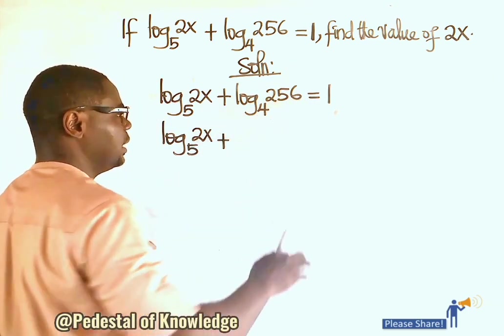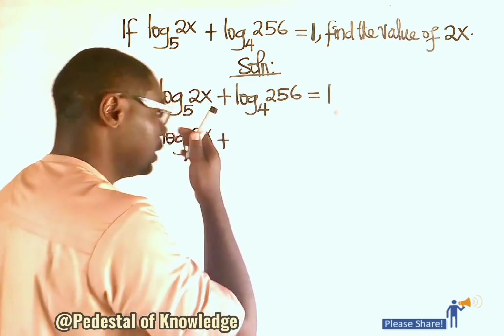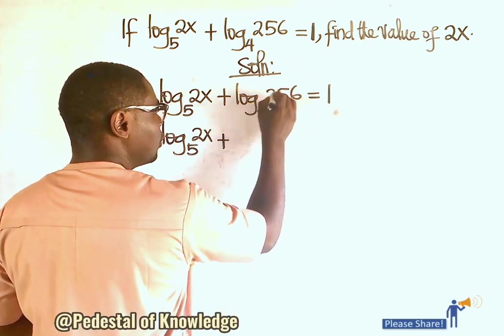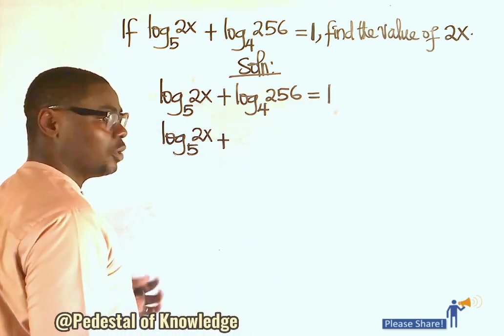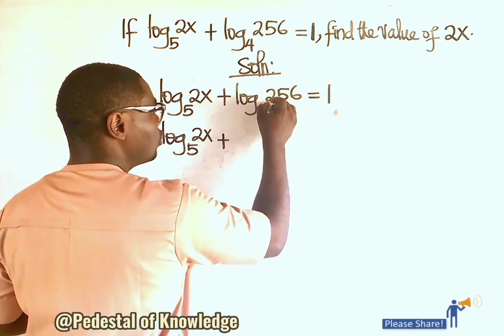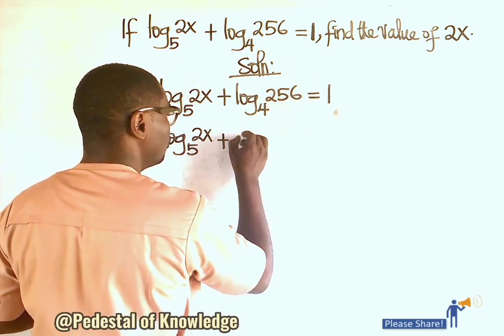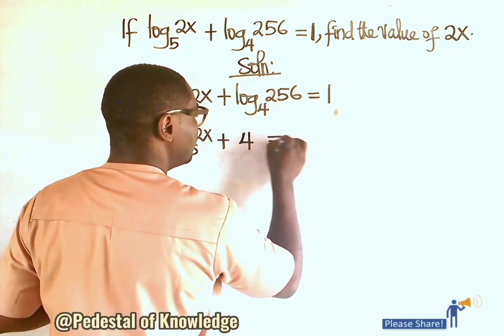Log base 4 of 256 is a number such that when we place that number on top of 4 as the power, the result is 256. That number is 4, because 4 raised to power 4 is 256. Therefore, this whole expression equals 4, and this equals 1.